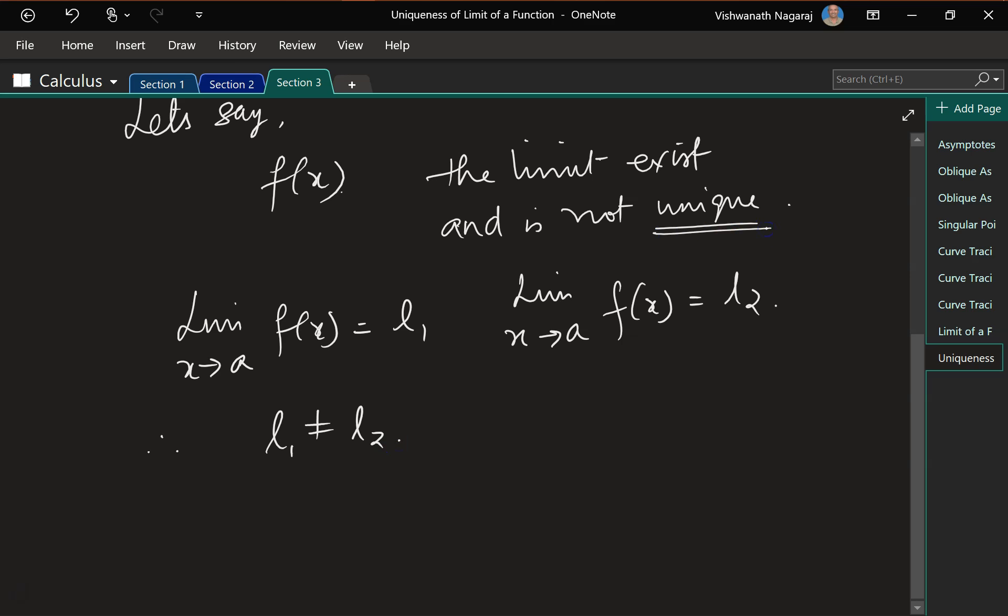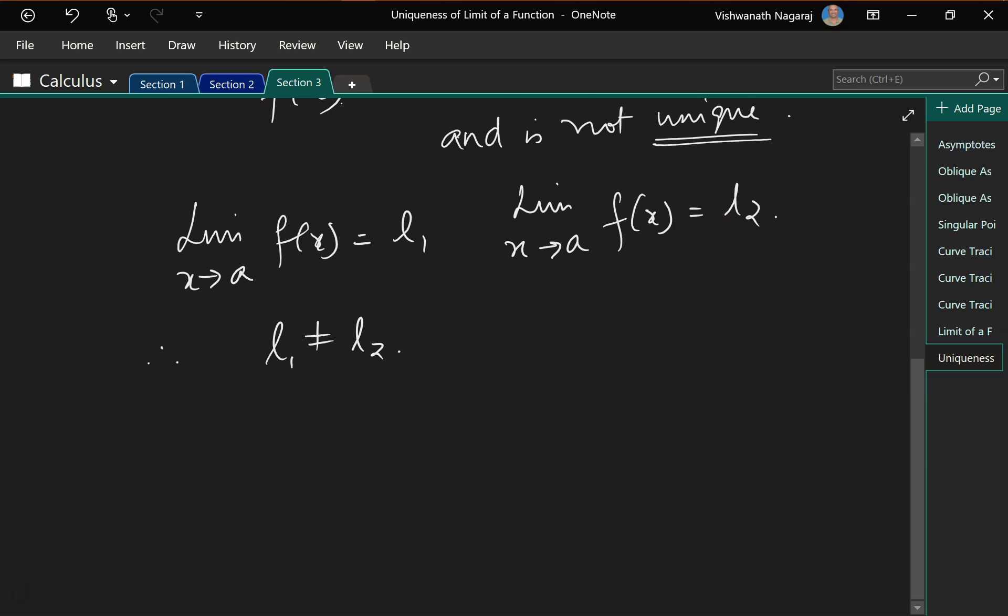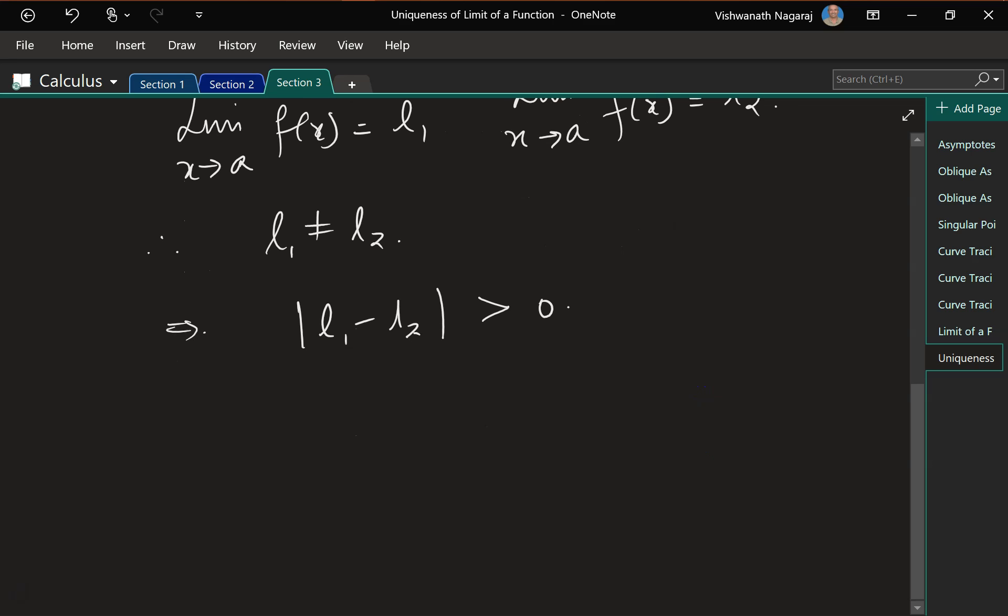Not unique basically means that these two limits are not equal, so which implies that there is a gap between these two. l1 minus l2 is greater than 0, the distance between l1 and l2 is greater than 0. Now, let's say, let l1 minus l2, remember which is greater than 0, let it be equal to 2 epsilon.